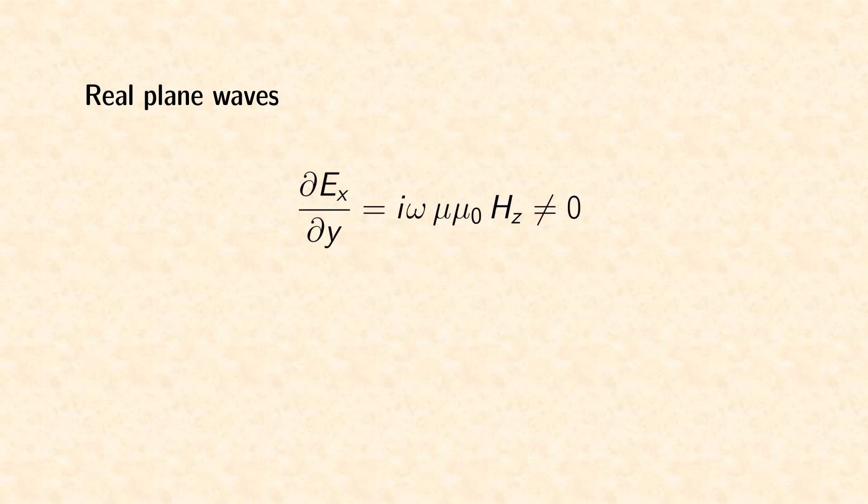Therefore the y-derivative in the curl of the electric field is not exactly zero, which means that the associated magnetic field gets an imaginary z-component.